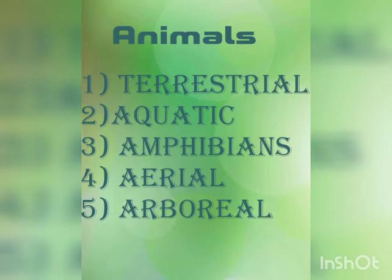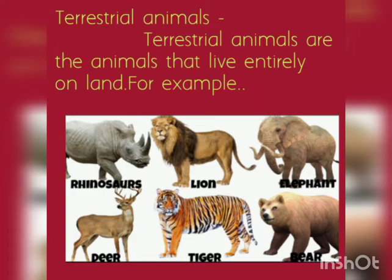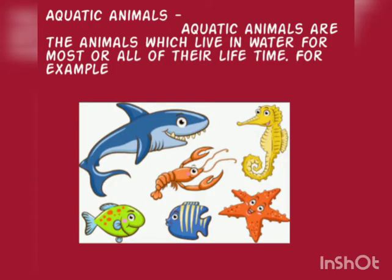They are terrestrial animals, aquatic animals, amphibians, aerial animals and arboreal animals. Terrestrial animals are the animals that live entirely on land. For example, lion, elephant, deer, tiger, bear, etc.